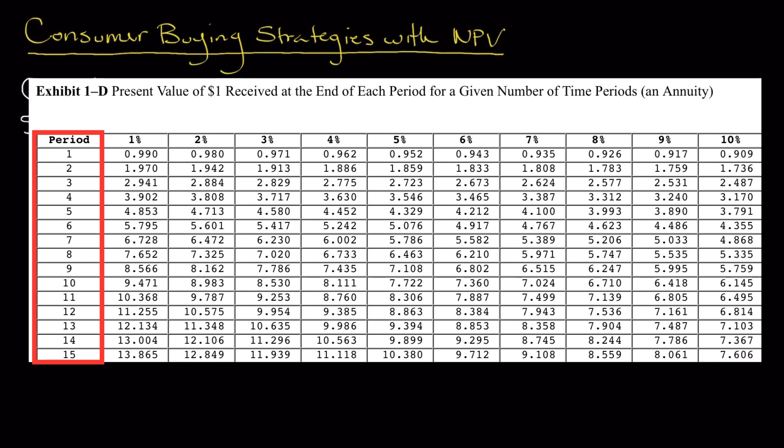So all you simply have to do is match up the actual column where your percentage is and then go down to the row where we see our number of periods. So we're going to find three percent, which is in the fourth column, and then we're going to go down to six, which is technically the seventh row if you include that top row there, which means that our present value factor is 5.417. Okay, so that's what we're going to use as the present value factor.